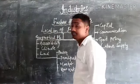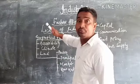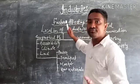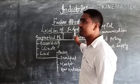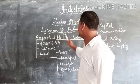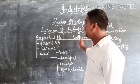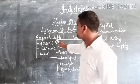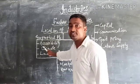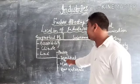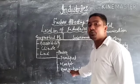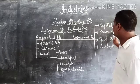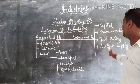Dear students, now we will see factors affecting the location of industries. These factors are classified into geographical factors and socio-economic factors. Geographical factors include accessibility, climate, land, geography, transport, market, and raw materials. Socio-economic factors include capital, communication, government policy, and labor supply.